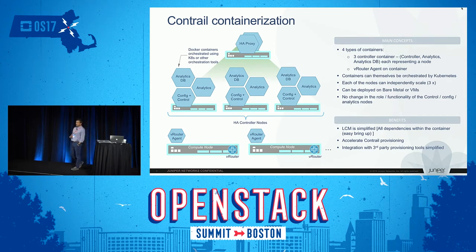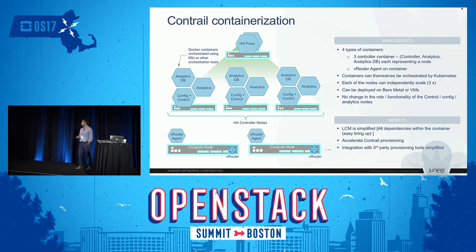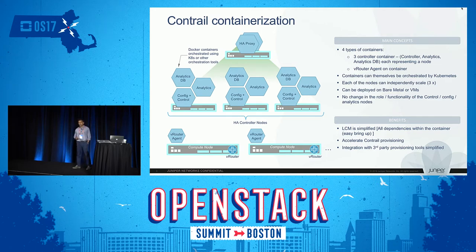With the latest 4.0 release, we have containerized our whole control plane. Previously we were running all these processes on bare metal servers, but now all these are Docker containers. There are four containers: three controller containers — controller, configuration, and control node — plus an analytics container and an analytics DB container, which is our Cassandra database for storing all stats and UVs.